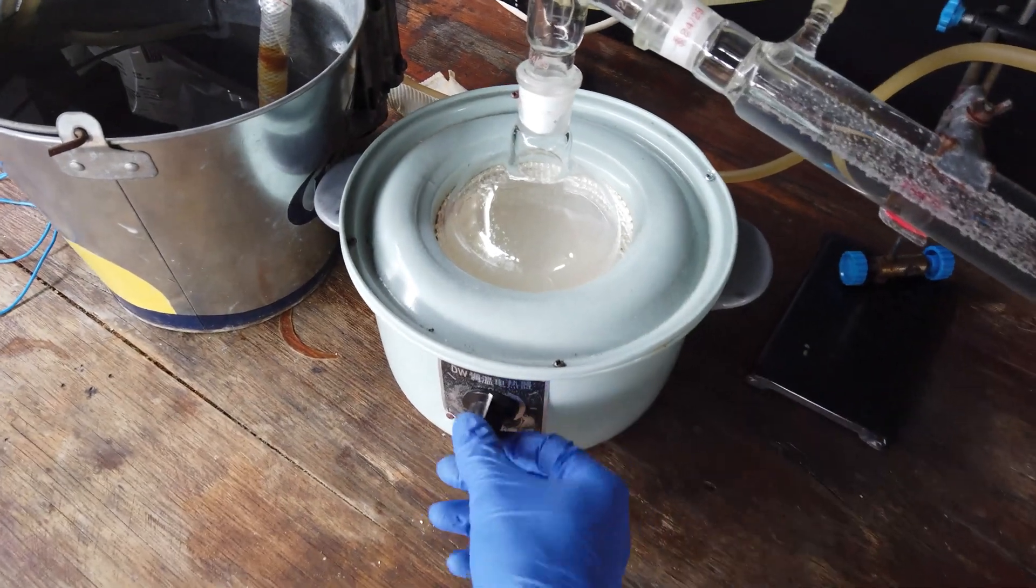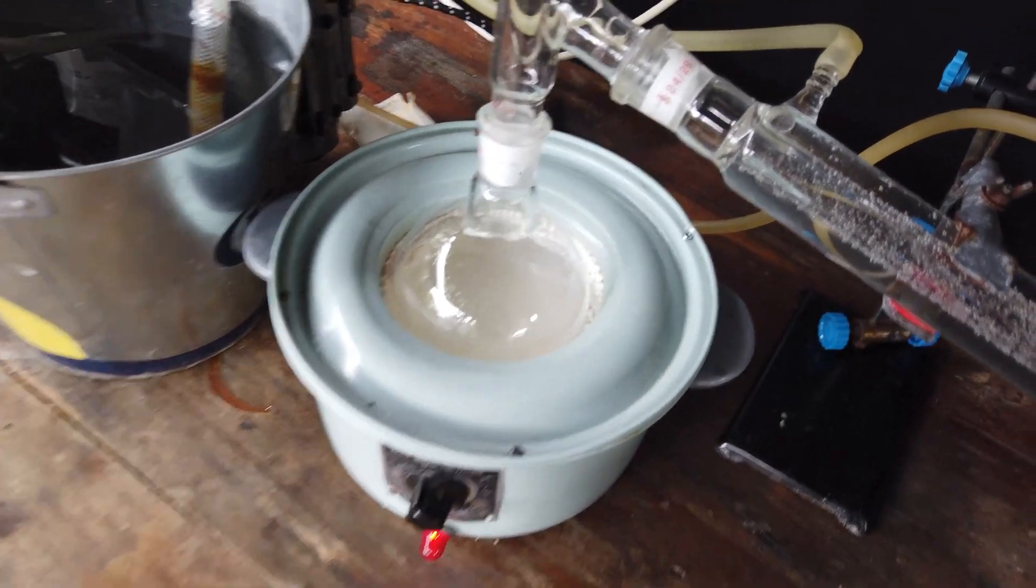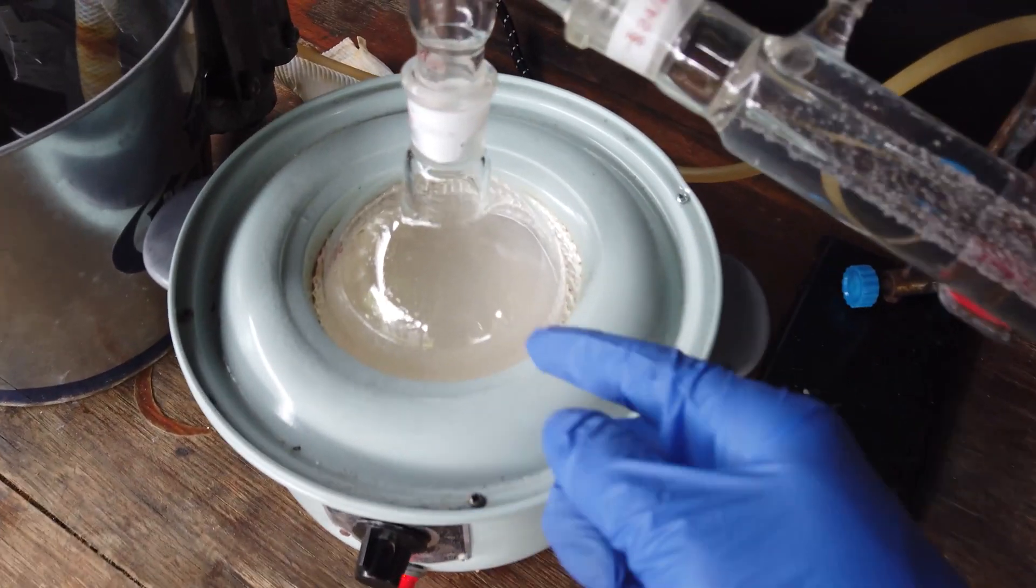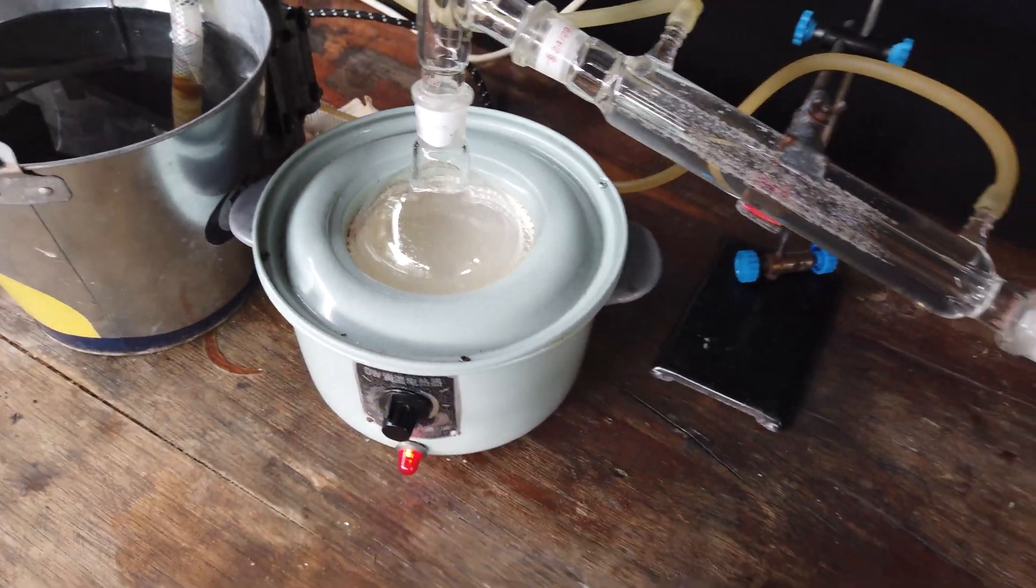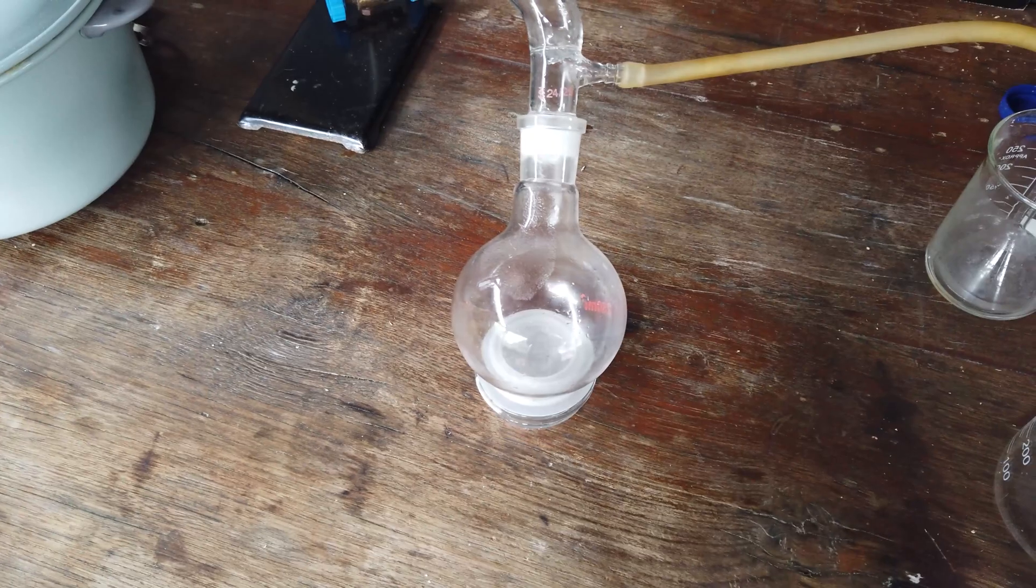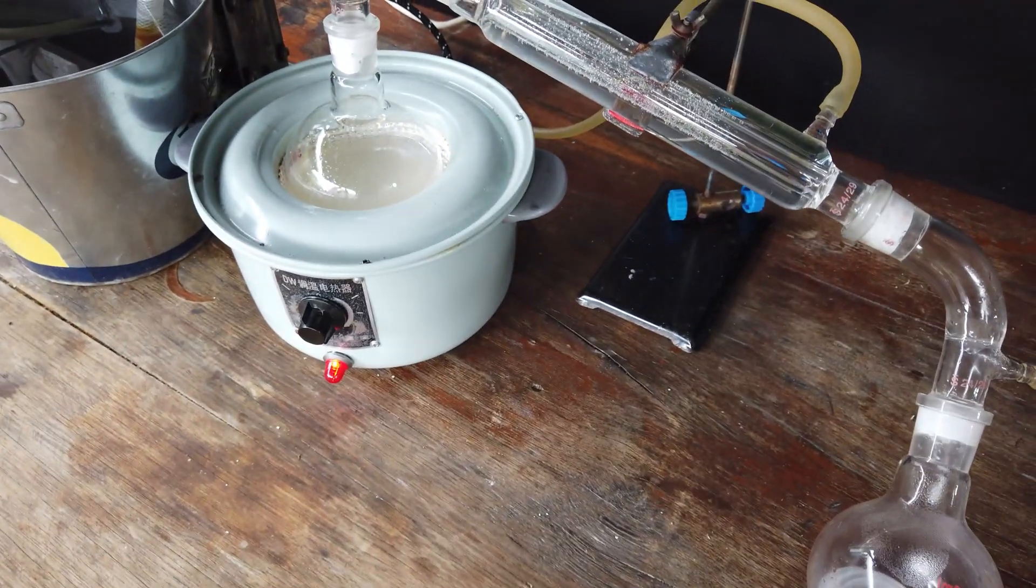Round two, we're ready to go once again. So I'll turn the heating mantle on. You can see our solution is quite cloudy now that we have concentrated the impurities from the previous batch, but once we've finished distilling over this 250 milliliters, I've emptied out the receiving flask. Once we've got that, we will have finished.